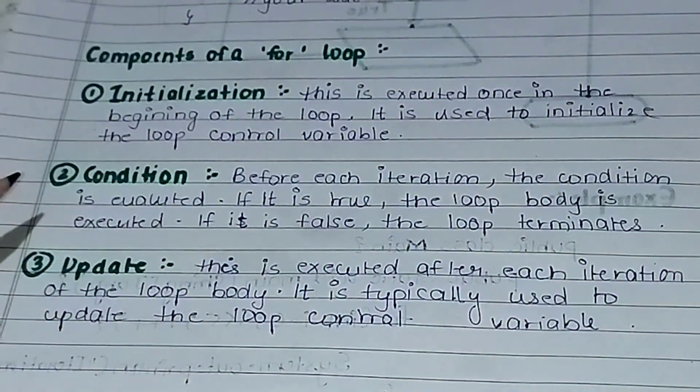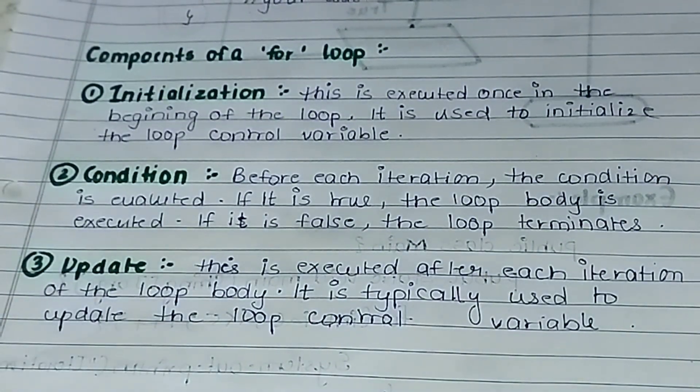Next is condition. Before each iteration the condition is evaluated. If it is true, the loop body is executed. If it is false, the loop terminates. So condition means on what basis our code will run. If our condition is true, then our loop body will execute. And if it's false, then of course it won't execute.